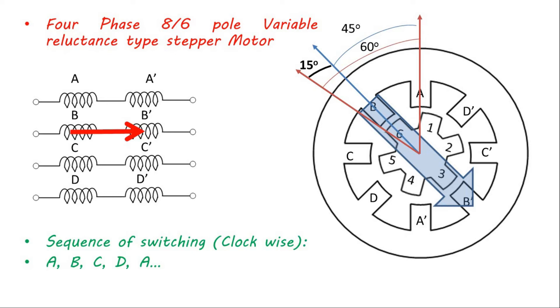This will result in clockwise 15 degree rotation of stepper motor. The step size can be determined from the difference of stator pole pitch and rotor pole pitch. In the next turn, phase C is turned on.